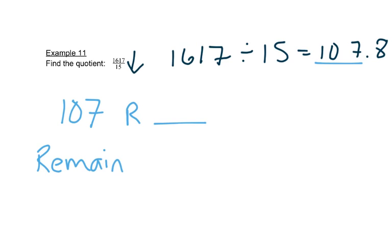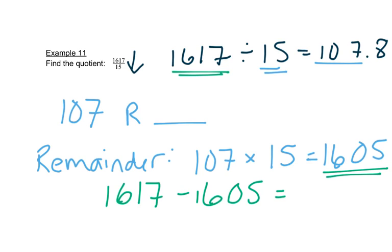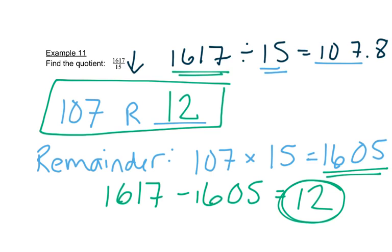So to find the remainder, we take that quotient, and we multiply by the number we were dividing by before. So we have 107 times 15, and we get 1605. So we need to see how far away is that 1605 from that 1617 that we started with. So we'll subtract, and we get 12 as our answer, and that answer from the subtraction is our remainder. So our final answer is 107, with a remainder of 12.